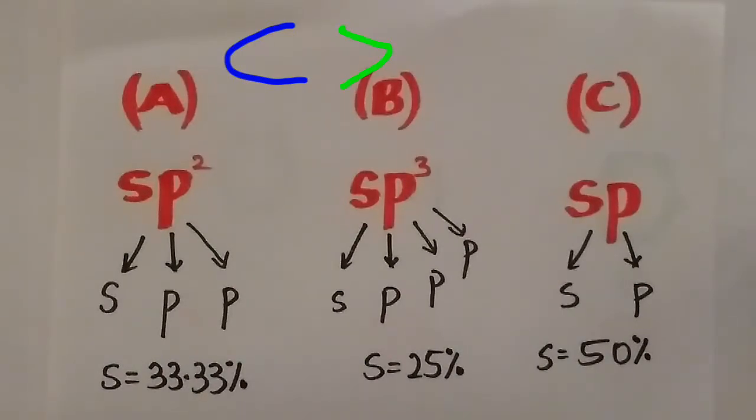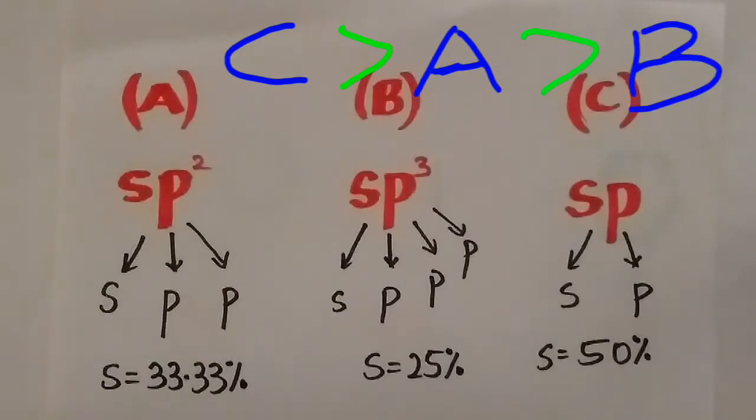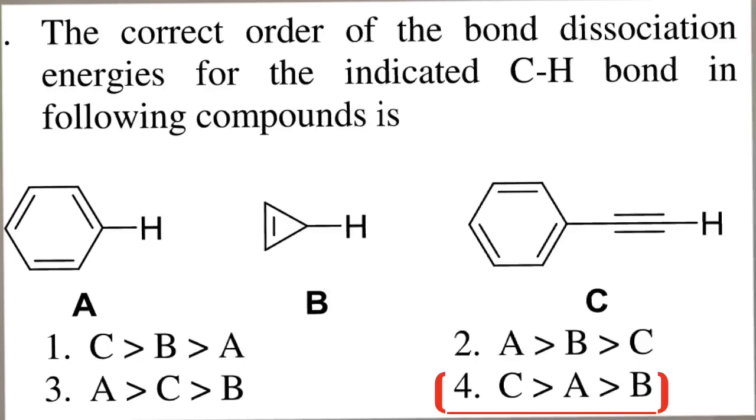Molecule C has the greatest bond dissociation energy since the percentage S character is more, that is 50%, followed by molecule A with 33.33%, followed by molecule B with S character 25%. Option D, C greater than A which is greater than B, is the right choice.